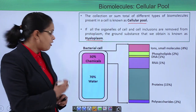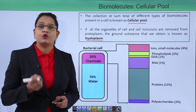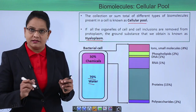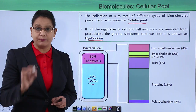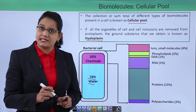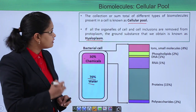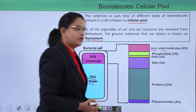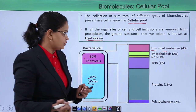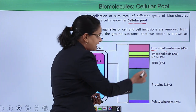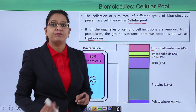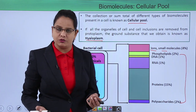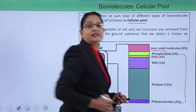Now imagine we have poured this cell hyaloplasm into a container. The result is that we obtain seventy percent water and thirty percent chemicals — this portion is the cellular pool. When this cellular pool was further analyzed, it was found to contain small ions and molecules along with large-sized molecules, which were phospholipids, DNA, RNA, proteins, and polysaccharides.